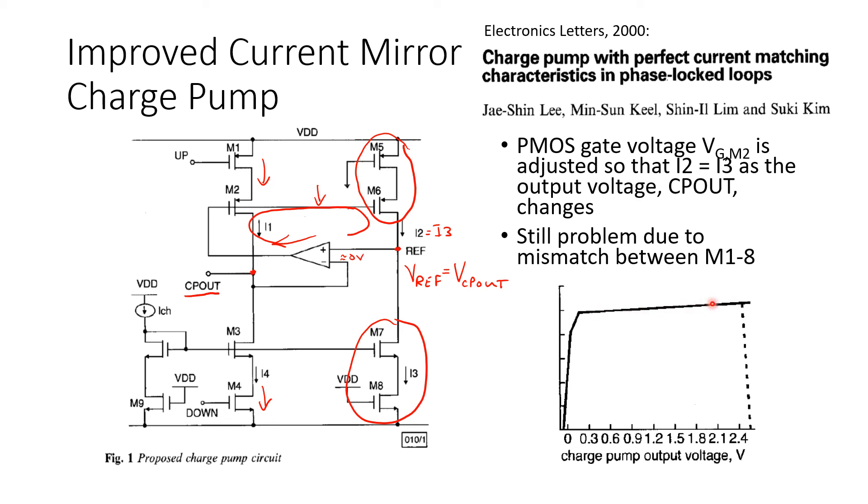So what you still have is a situation where the PLL loop dynamics vary depending on what the voltage is here. So things like the loop gain, loop bandwidth will depend on the lock point, the voltage at which the PLL rests in lock here. But at least you won't have that nonlinearity which gives rise to spurs.